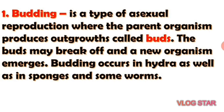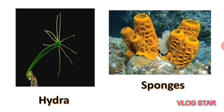The first example is budding, a type of asexual reproduction where the parent organism produces outgrowths called buds. The buds may break off and a new organism emerges. Budding occurs in Hydra, as well as in sponges and some worms. This image shows an example of Hydra, and the yellow one is an example of sponges.